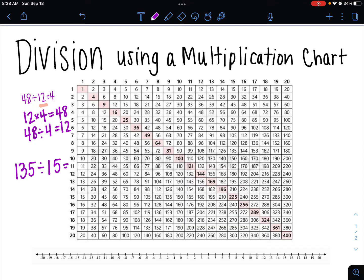So we can use the multiplication chart again. We're going to start by looking at this second number, and going over until you find the first number, which is 135. So we've got 15, 30,